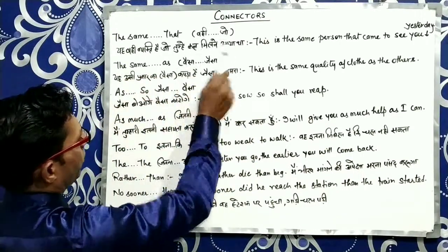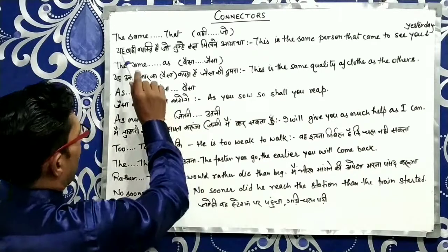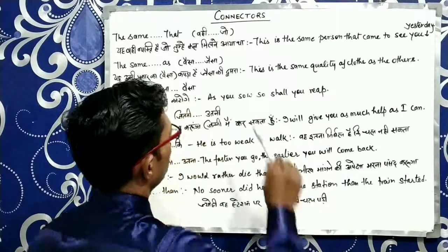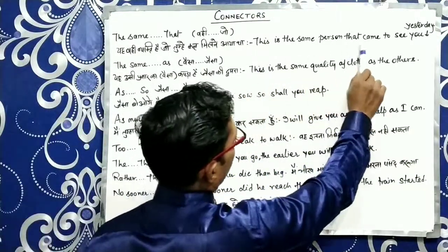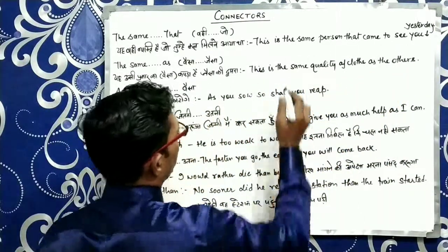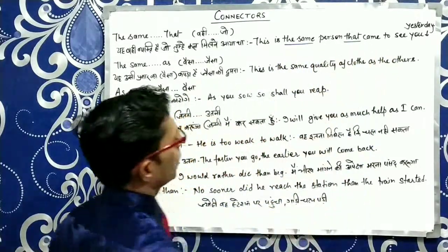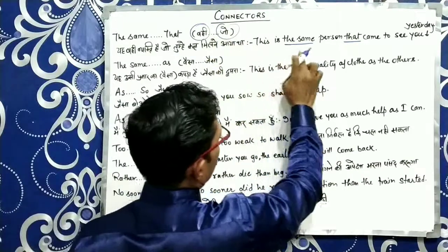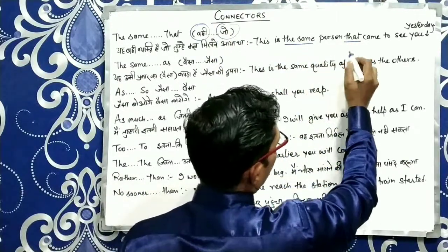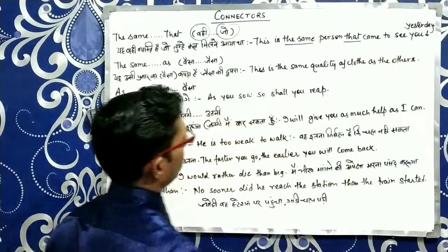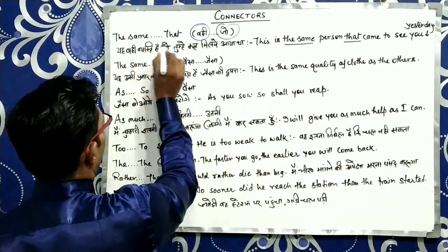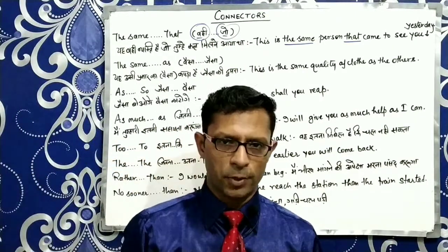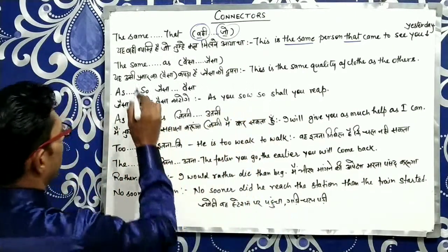یہ ہے وہی شخص ہے جو تمہیں کل ملنے آیا تھا. This is the same person that came to see you yesterday. یہاں پر The Same That connector کا use ہو رہا ہے — وہی اور جو. تو جب آپ کے sentence میں 'وہی اور جو' شبد کا use ہوگا تو آپ The Same That کا پریوگ کریں گے.